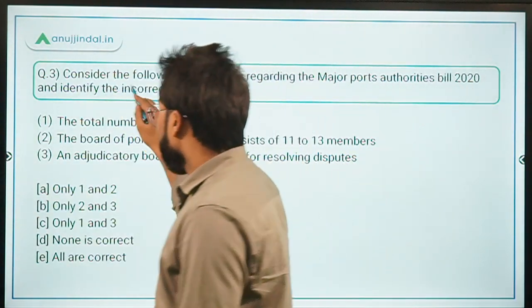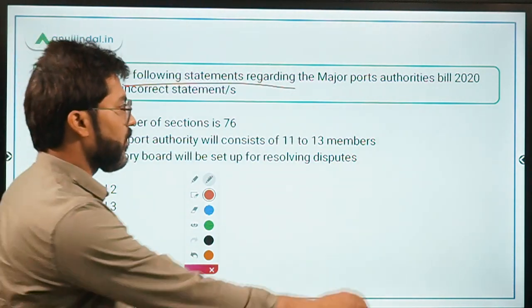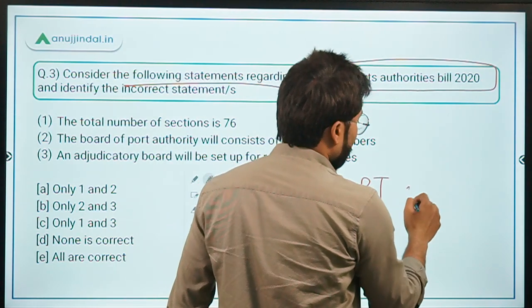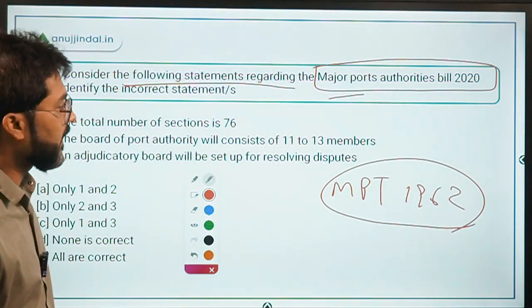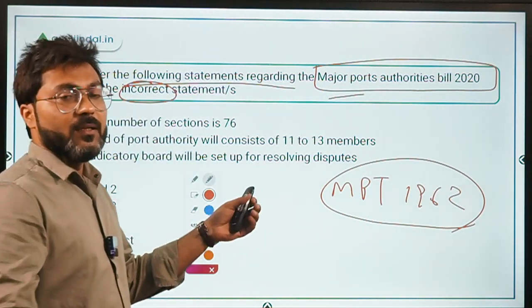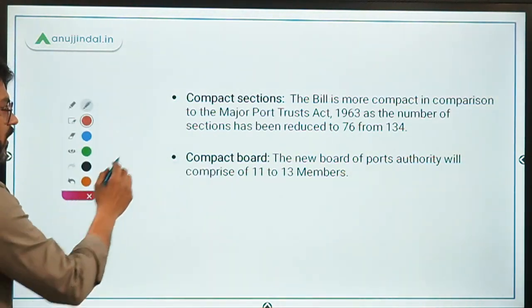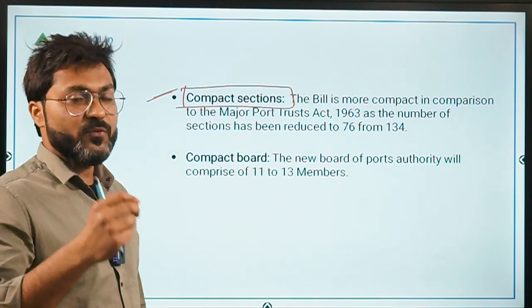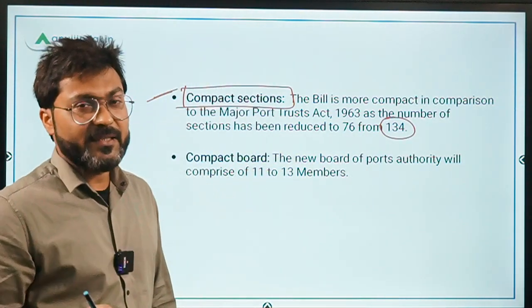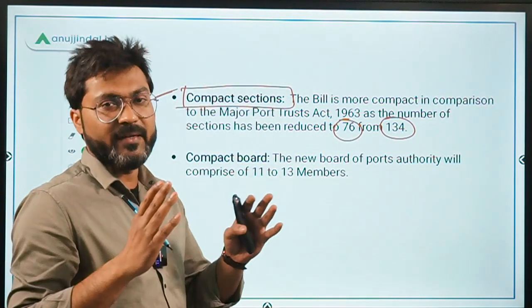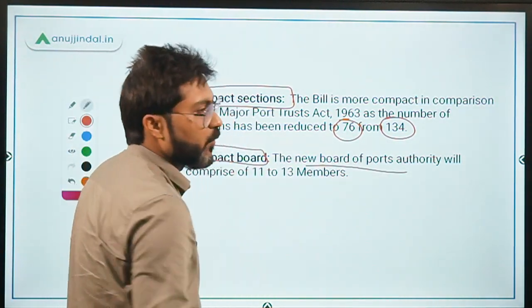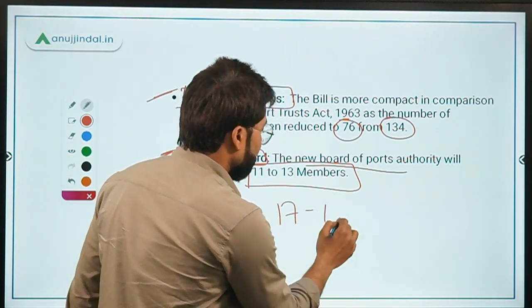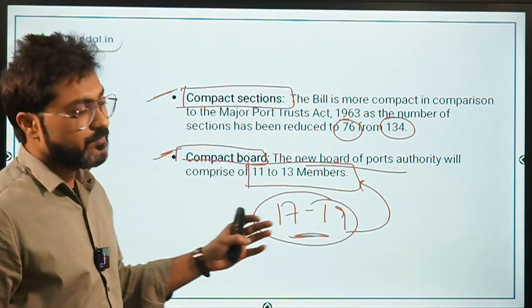Now let's move to question three, considering statements about the Major Port Authority Bill 2020. This bill has been introduced and, if passed, will replace the Major Port Trusts Act of 1963. The bill has fewer sections — reduced from 134 sections in the old act to 76 sections. The new board of port authority will consist of 11 to 13 members, reduced from the current 17 to 19 members.